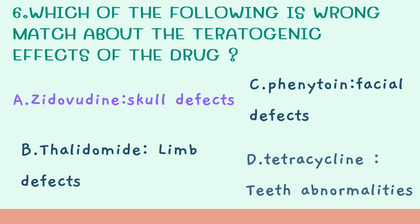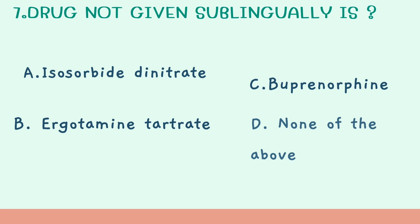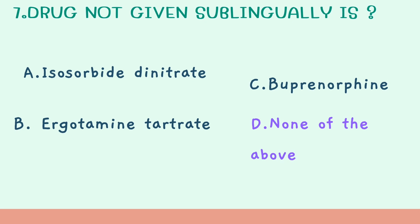Seventh question: which drug is not given sublingually? Option A: Isosorbide dinitrate. Option B: Ergotamine tartrate. Option C: Buprenorphine. Option D: None of the above. The answer is none of the above, because all three drugs can be given sublingually. Isosorbide dinitrate is a nitrate given sublingually. Buprenorphine is an opioid partial agonist used sublingually. Ergotamine tartrate is also available sublingually.